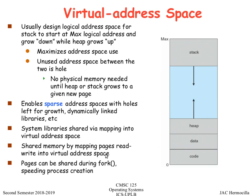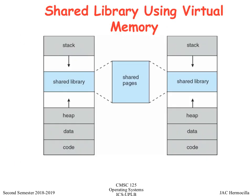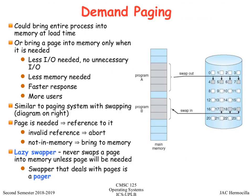Shared memory works by mapping pages into the virtual address space, and pages can be shared during fork, speeding up process creation. When we create a new process using the fork system call, the parent's address space is copied and control is transferred. The C runtime libraries like glibc are shared by different processes to conserve memory.